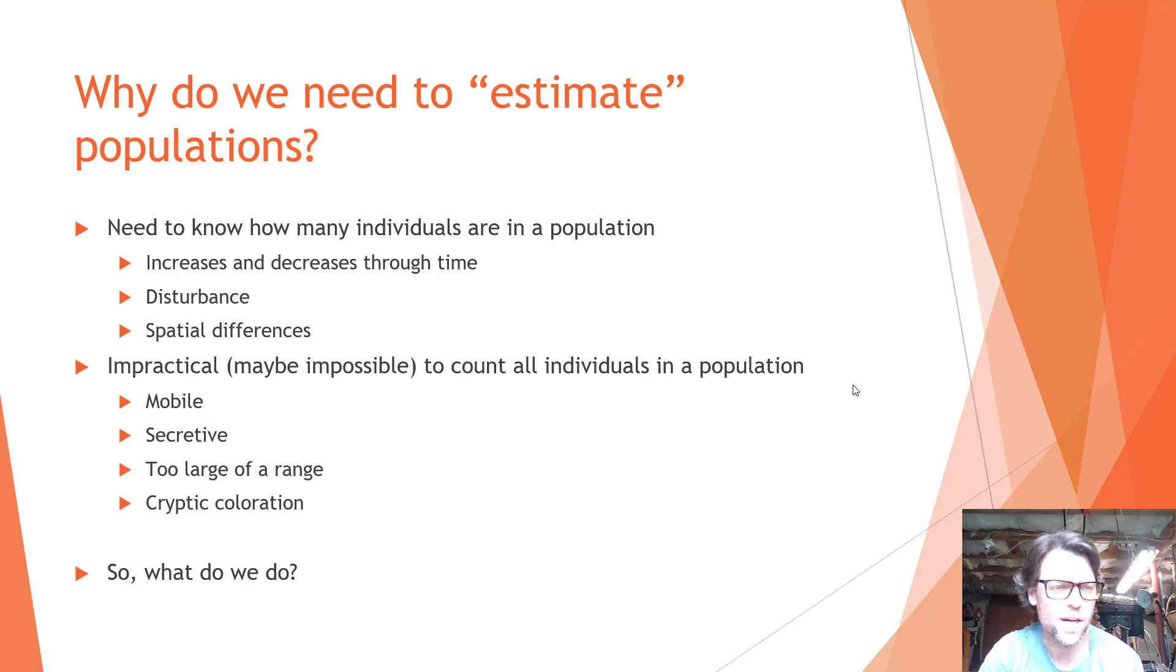So it can be really impossible, at least impractical, to count all of the individuals in a population. So we talked about this earlier when I did the intro to statistics about a sample and sampling the population and trying to estimate how big the population actually is. And the reasons that we might want to do this and the reason that it's impractical or even impossible is that species tend to be mobile or individuals do. They can be somewhat secretive. Their range can be too large. They can be cryptic in coloration, difficult to find, etc. So what do we do? How do we estimate populations?